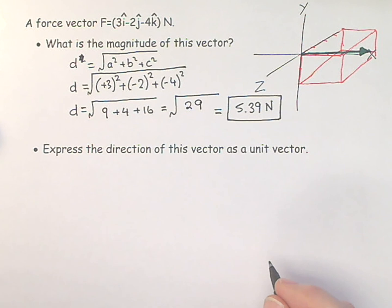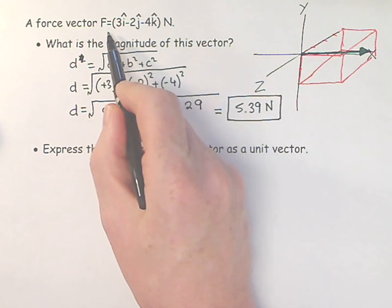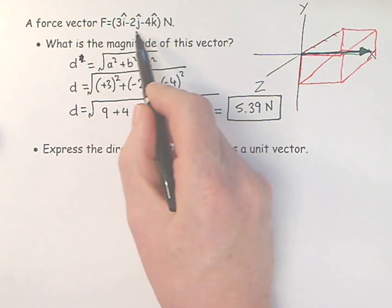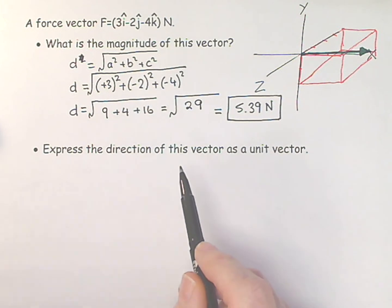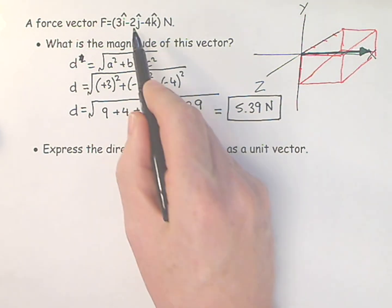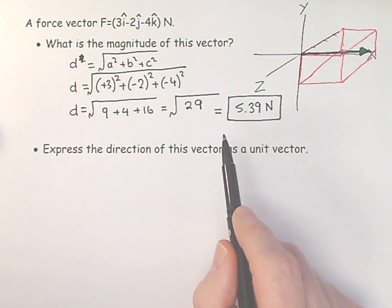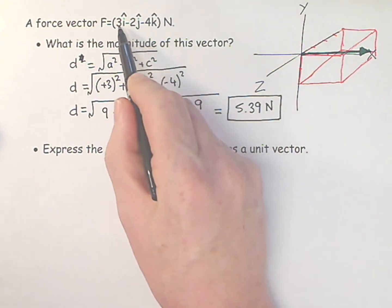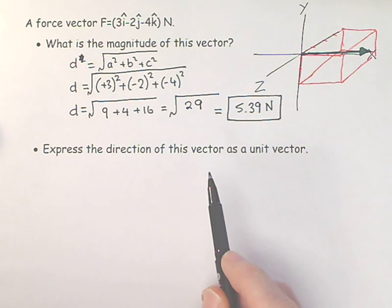And now let's think about the direction. This is pointing in the correct direction, but it's way too long. How long is it? It's 5.39 units long. So it's the right direction, but it's not a unit vector because it's not got a magnitude of 1.